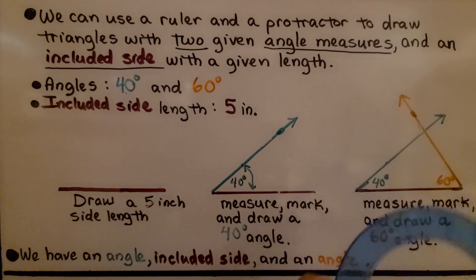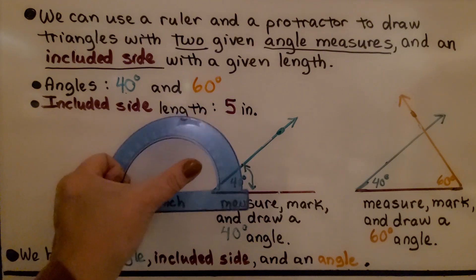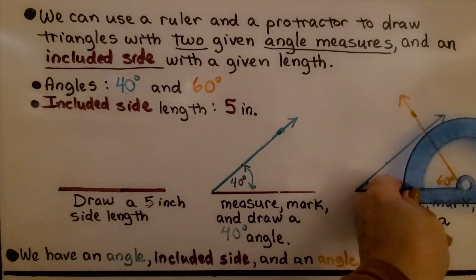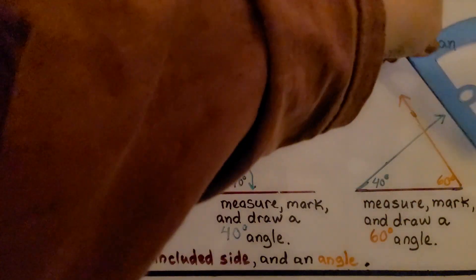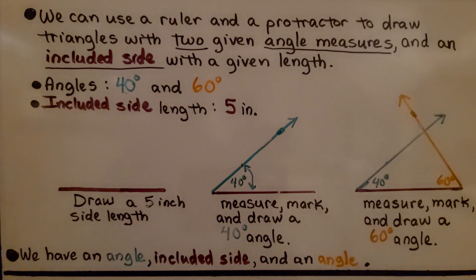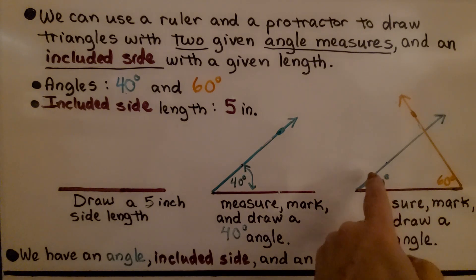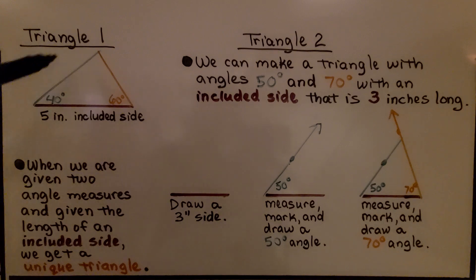We do the same thing for the other side. When we did the first one, we used the inside measures of the curve. Now we're going to use the outside measure because the opening is facing left. We come here, put a little mark showing where 60 degrees is, then use the straight side to draw our ray. And we have an angle, included side, and angle — angle, side, angle. So we just made our first triangle with a 5 inch included side, a 40 degree angle, and a 60 degree angle. That's our triangle.